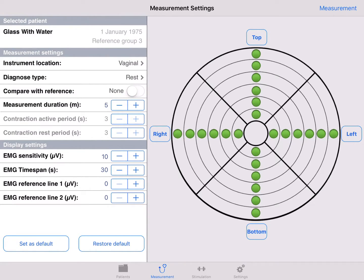Chapter 5: Measurement. We are now ready to start a rest measurement with no comparison to the reference group. To show you the principle, we use our dummy patient glass with water.